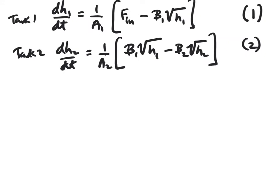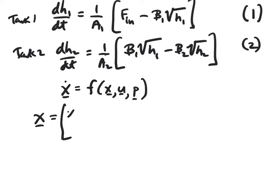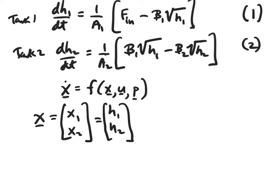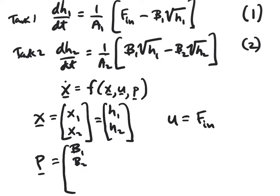This is exactly the same general form as x-dot equals a function of states x, inputs u, and parameters p. In our case, states x1 and x2 are simply the tank heights that appear in the accumulation terms. We have one input, the volumetric flow rate Fn, and four parameters: flow coefficients beta1 and beta2, and the cross-sectional areas a1 and a2.